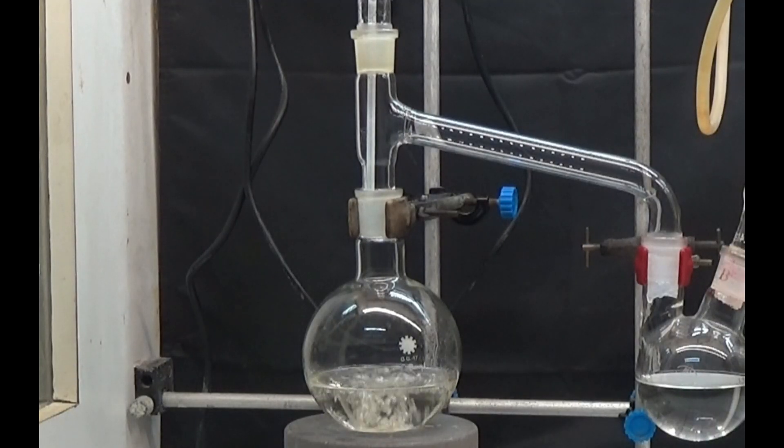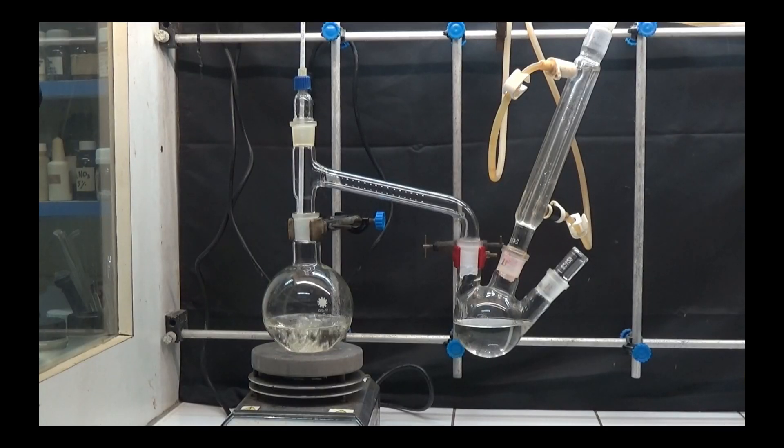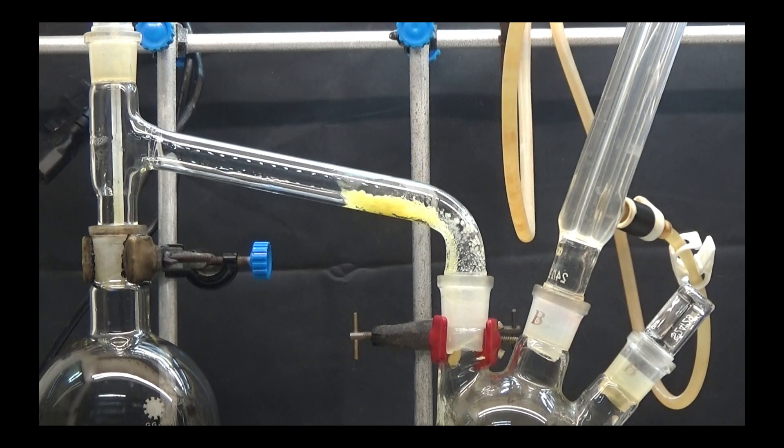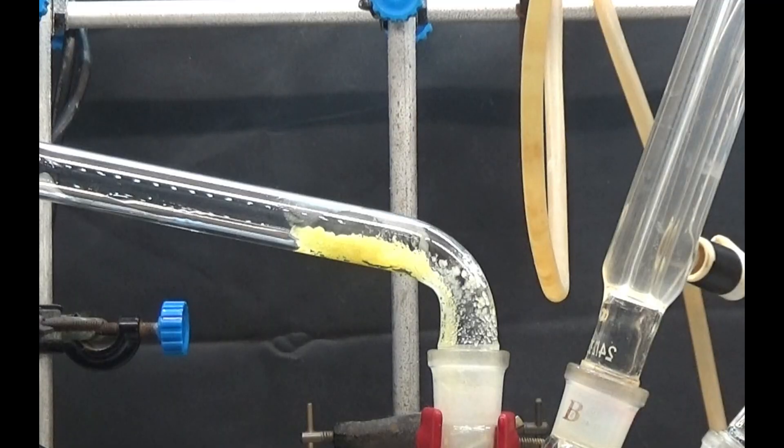Assemble a 500ml flask with a distillation head. Connect the outlet tube to another 250ml three-necked flask. The tube must be 20mm and not smaller. Succinamide can solidify in the tube and obstruct the distillation.